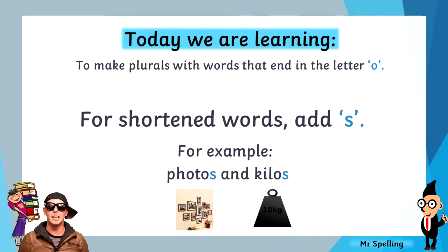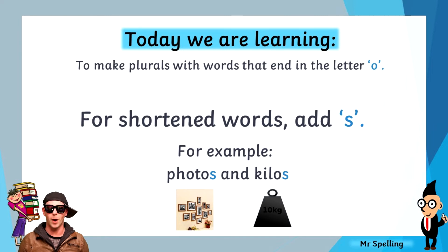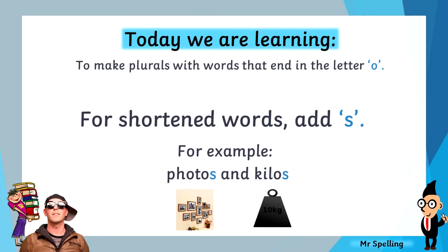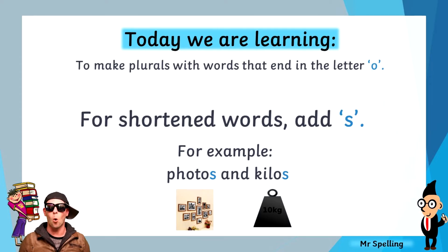The next guideline is for shortened words. If the word has been shortened, just add S. For example, we have the word photograph — we shorten it down to photo, and because it's shortened, we just add an S to make photos. And we have the word kilogram, which we shorten to kilo. And because kilo has already been shortened, we just add the S to make it kilos.